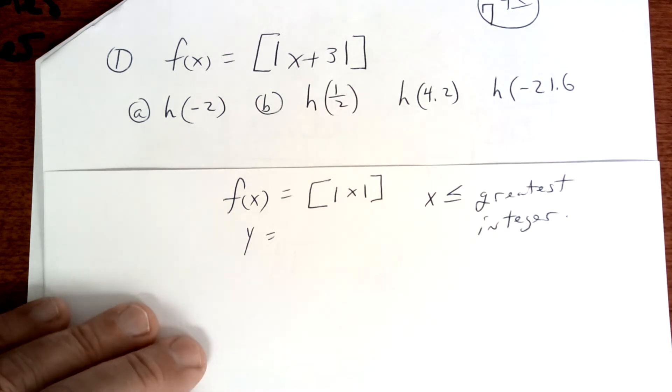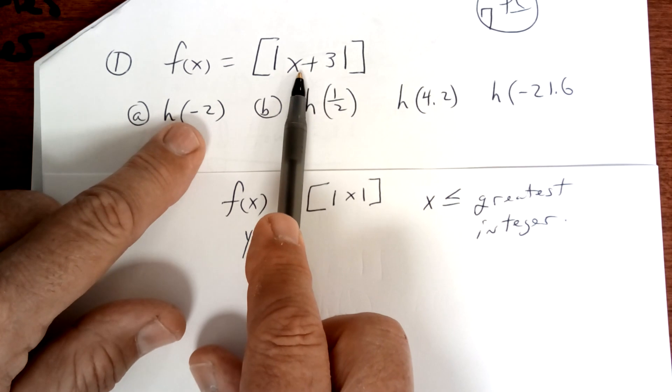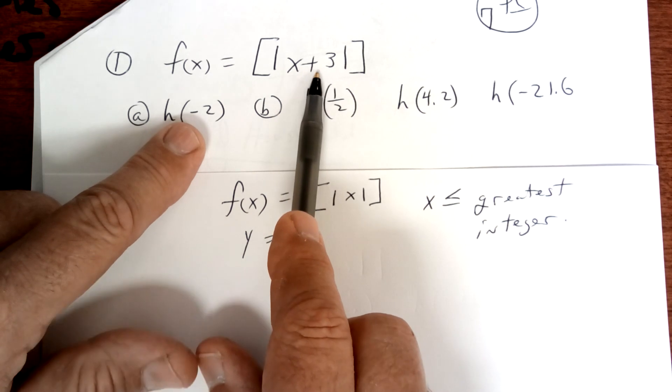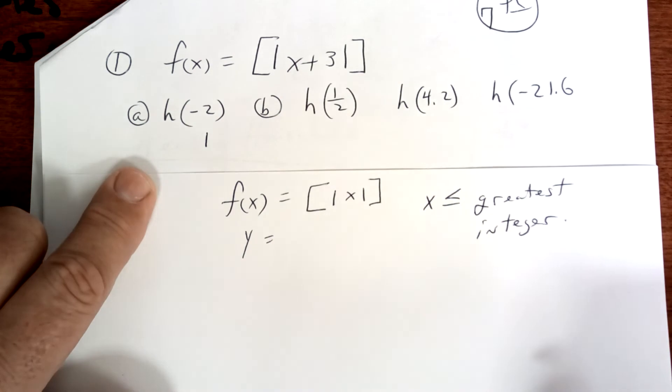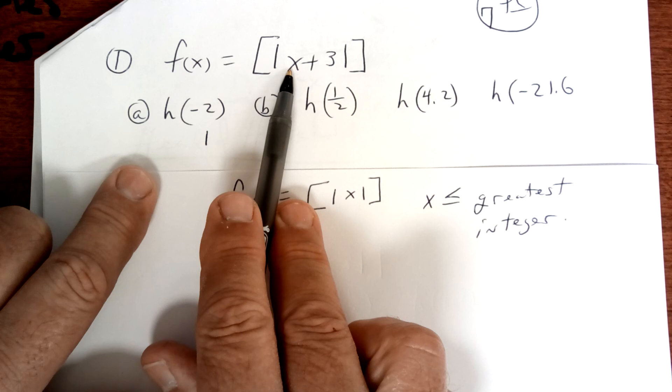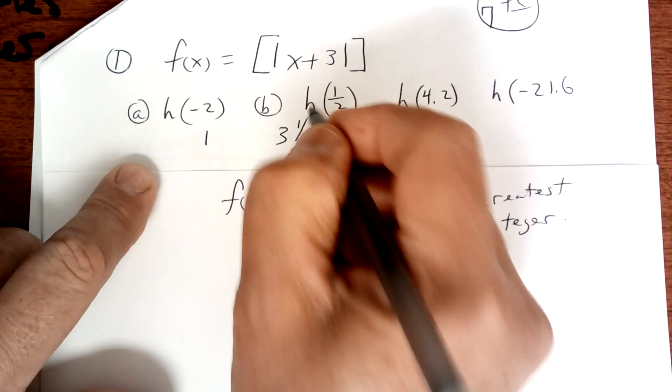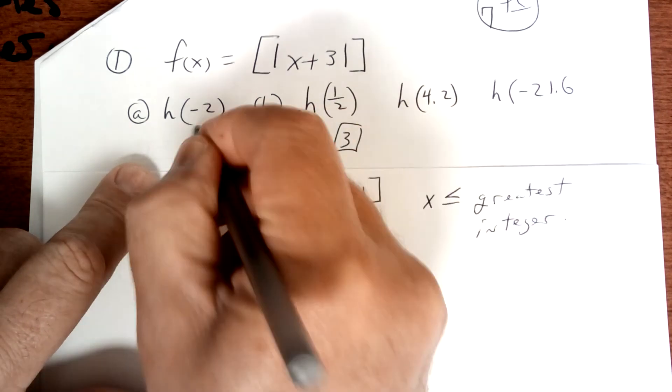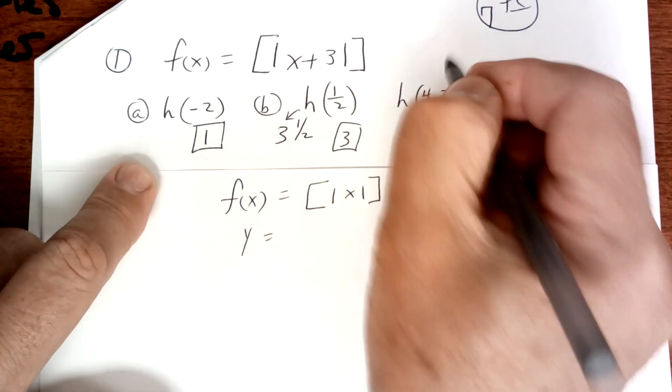Write that down. So let's evaluate these. When you put negative 2 in here, you get negative 2 plus 3, which is 1, and so the greatest integer is 1. So if it's already an integer, then it's going to be 1 for that one. If you put a half in here, then you add it to the 3, you get 3.5, so you always round down to the greatest integer, so this would be 3. This one is 4.2 and you round down to the greatest integer, which is 4.